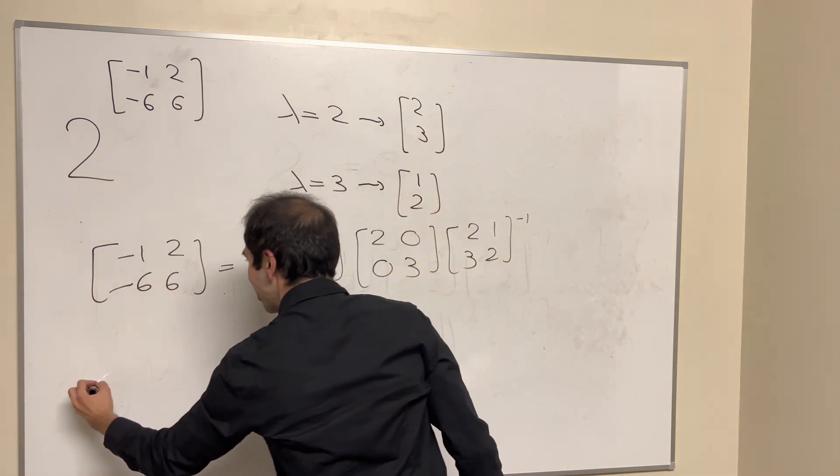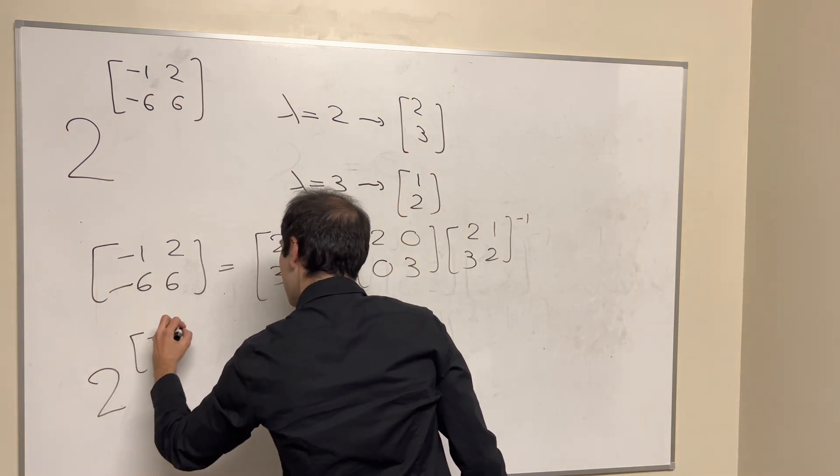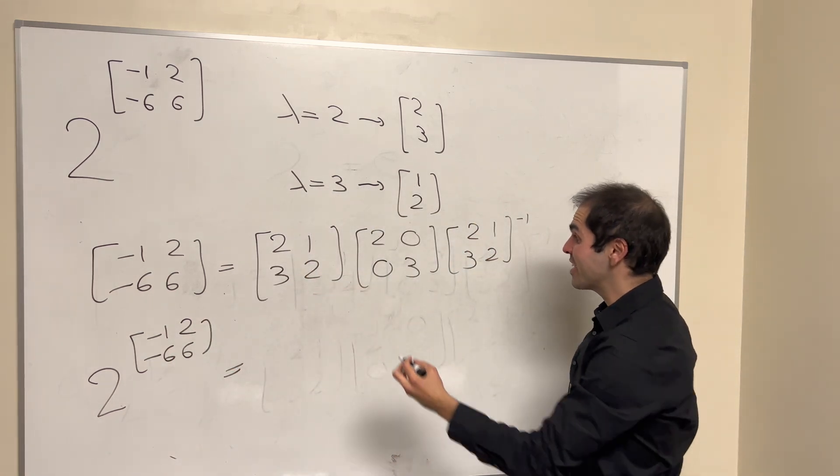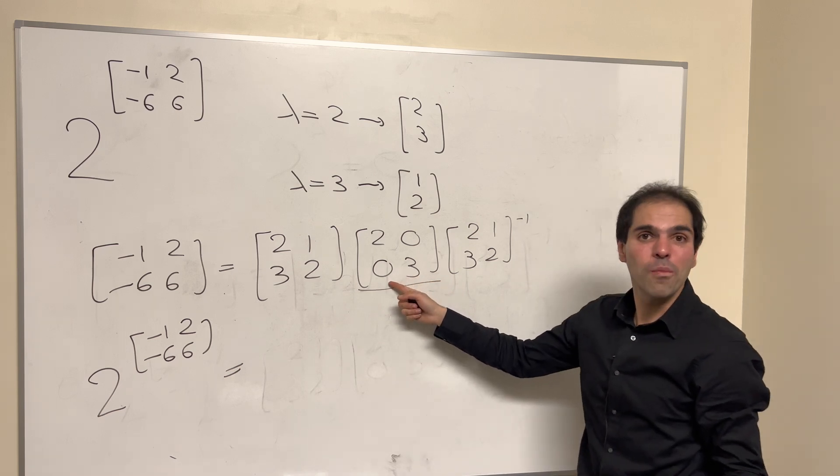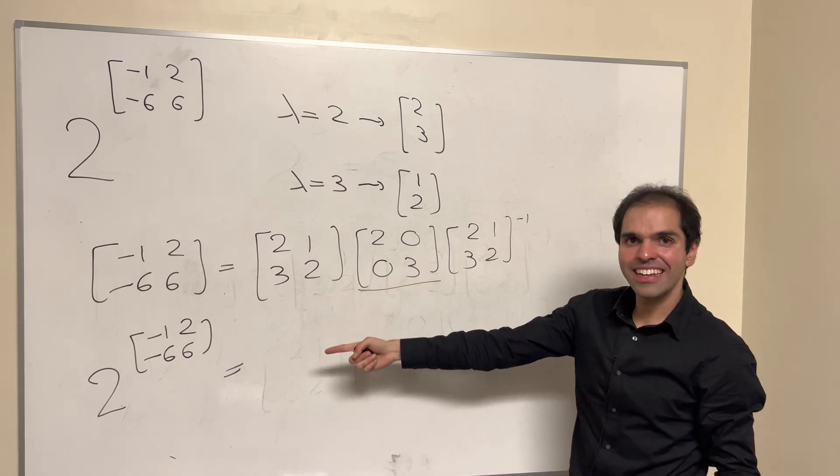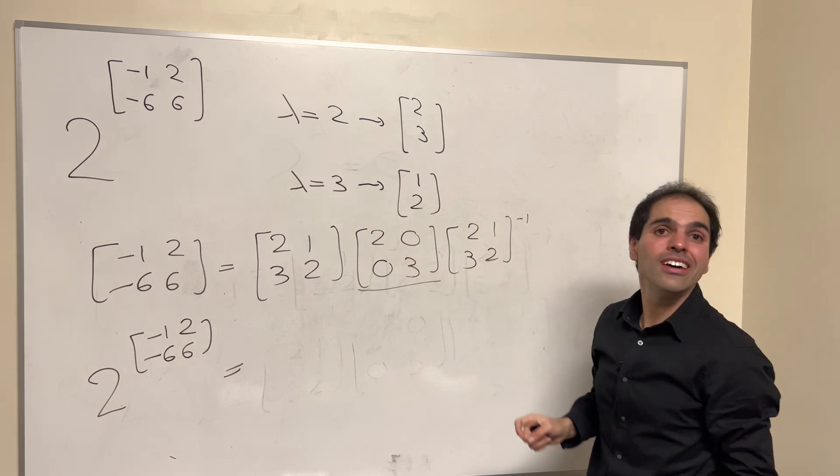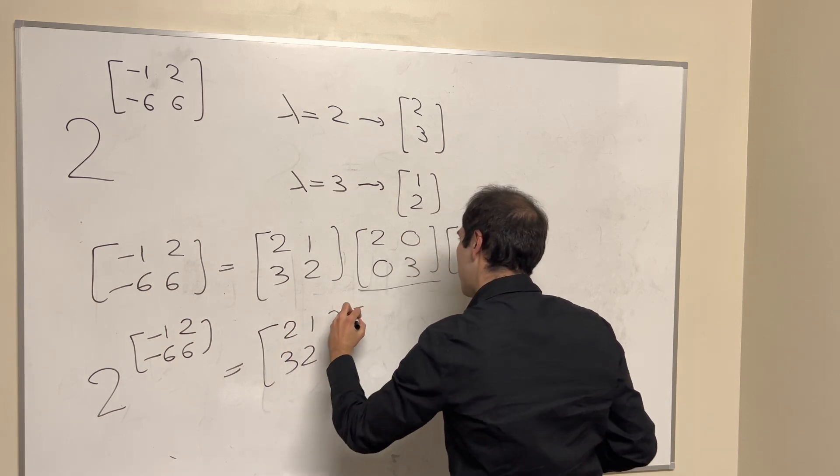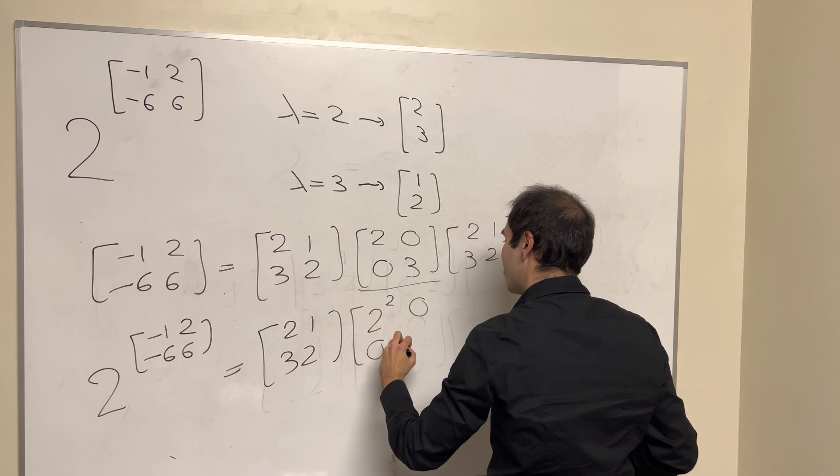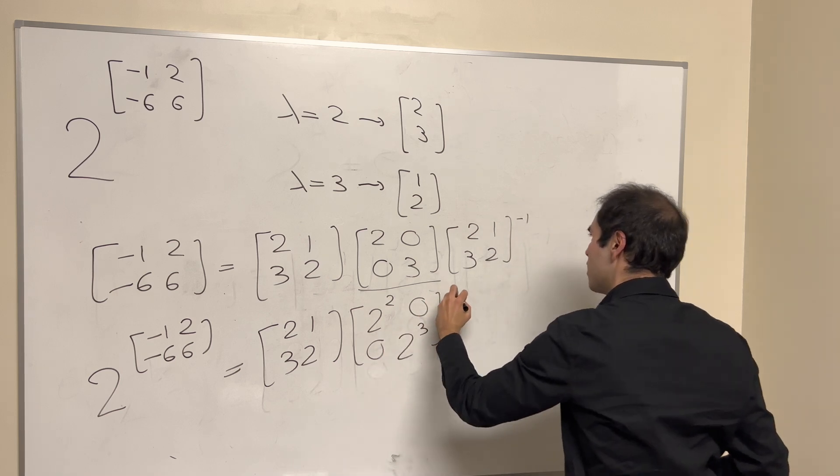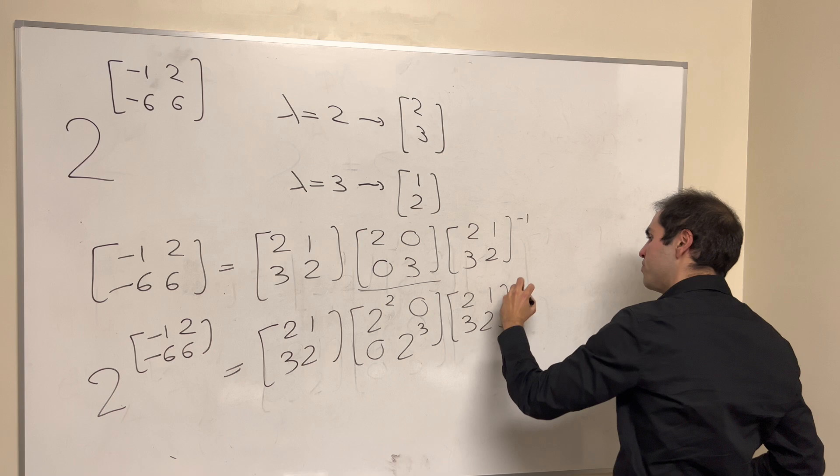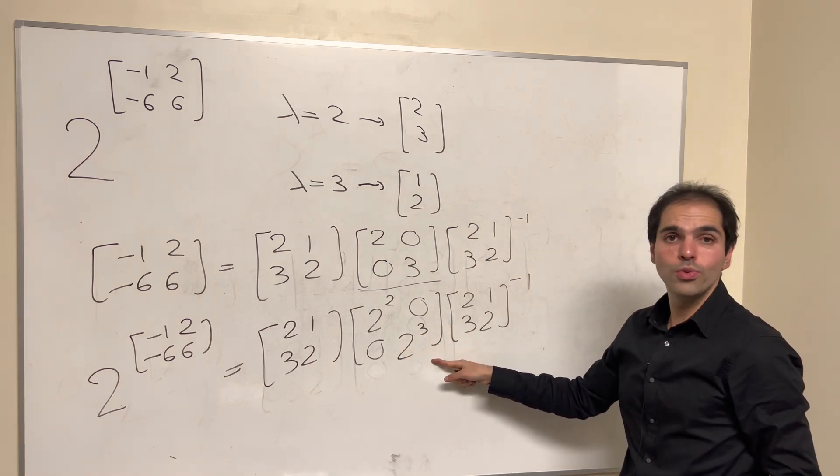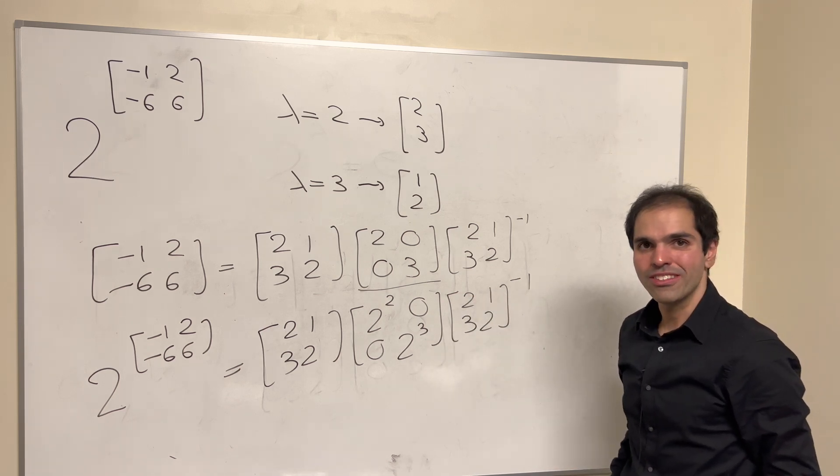And now the question is, how do you calculate 2 to that matrix? Minus 1, 2, minus 6, 6. Well, whatever you do to the matrix, you do to the diagonal part of it. So in particular, to calculate 2 to the matrix, you just do 2 to the eigenvalues. So we just get 2, 1, 3, 2, and then 2 squared, 0, 0, 2 to the third, 2, 1, 3, 2, inverse. And so all that's left to do is calculate this 2 squared, 2 cubed, and multiply those matrices out.